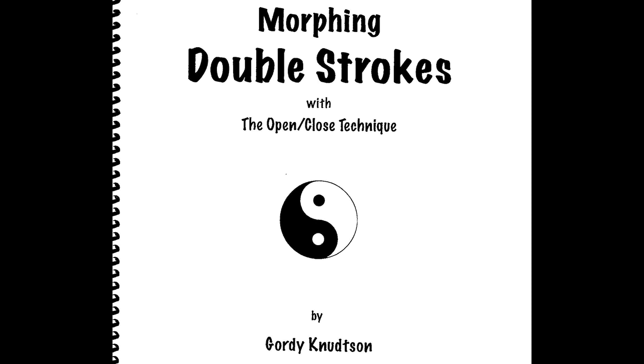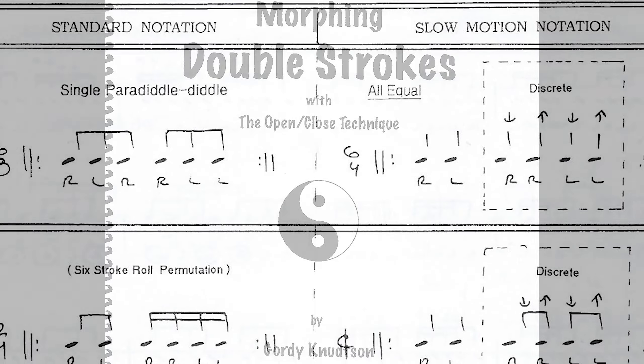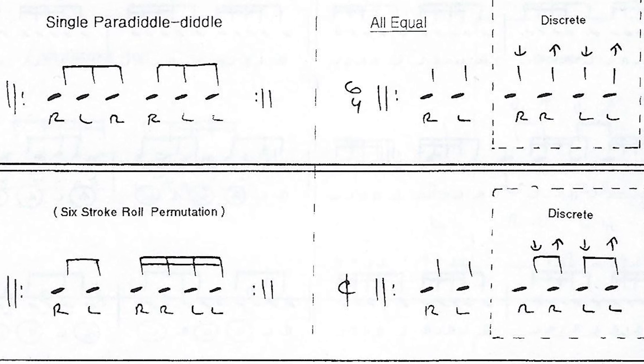In this video, I'll be talking about Gordy Knudsen's system of notation, called slow motion notation. To do this, I'll be taking a page right out of his book, Morphing Doubles, to show you how to morph the single paradiddle diddle.